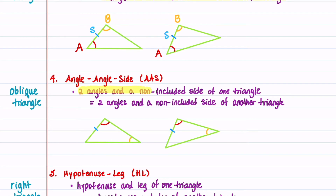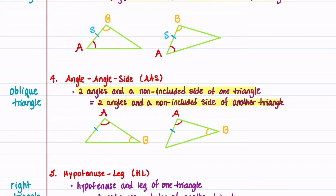Our next theorem uses the side not between these angles, called the not-included side. Our angles in red are equal, our angles in orange are equal, and the side not between these angles — the not-included side — are equal.